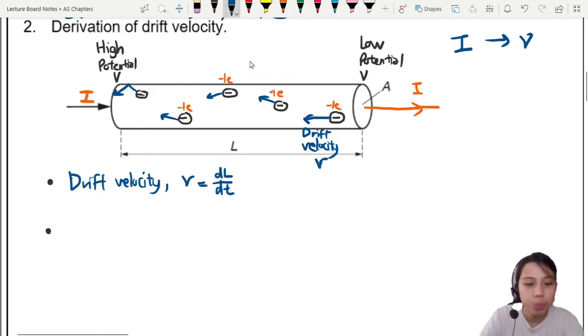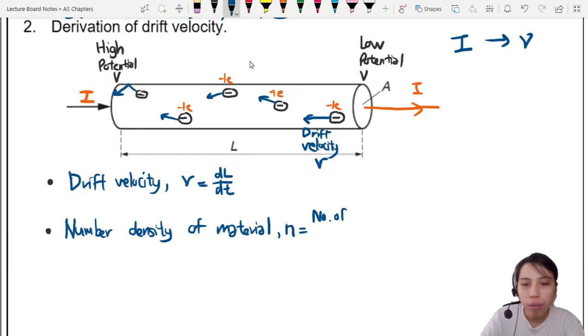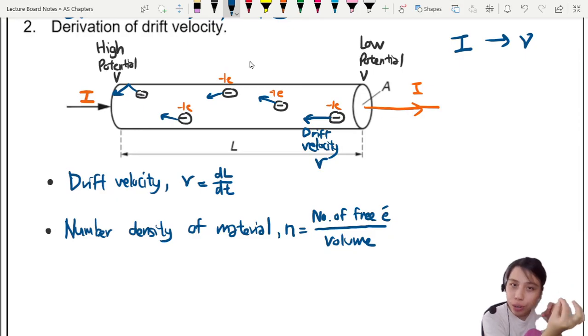This is how we do it. So, number two. Fact number two. There's this thing called the number density in the material. We use the symbol small n for this. And this will be the number of free electrons per unit volume of the material. Remember, just now we say all the atoms got free electrons. They can come out one, right? So, how many of these free electrons are there per unit volume? How many of them are ready to fly?